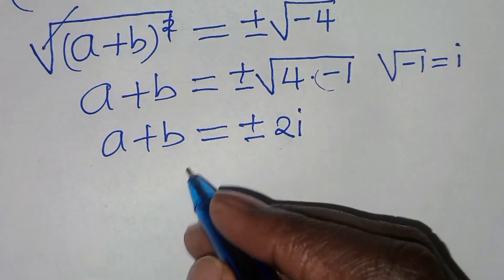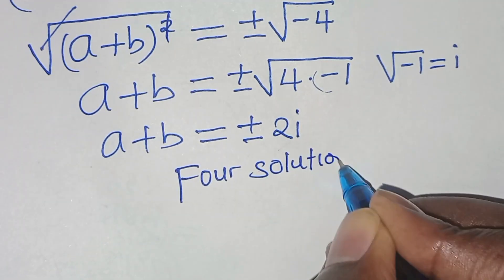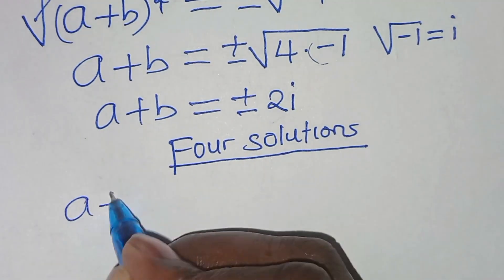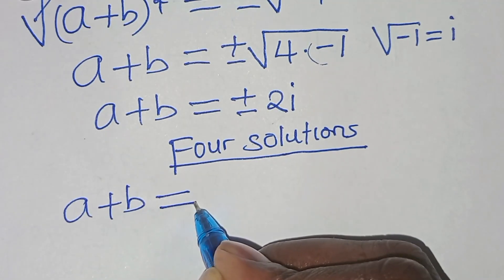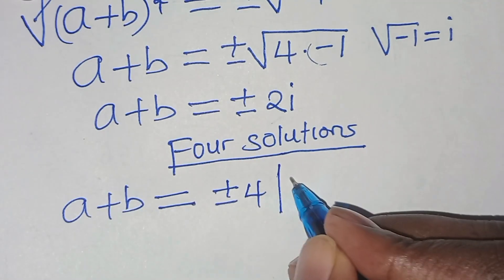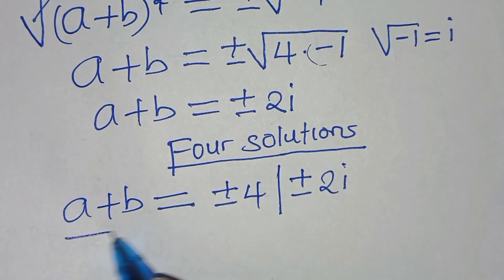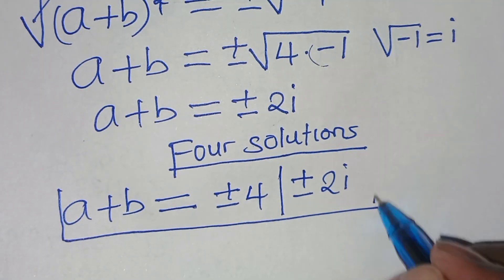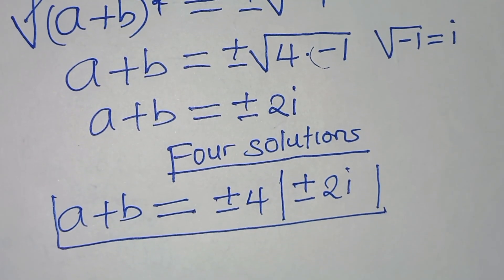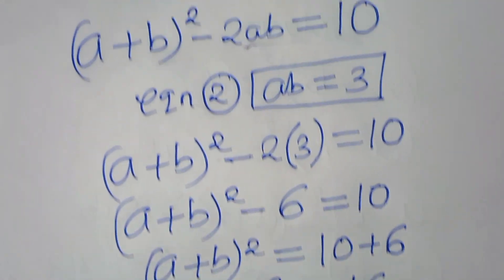So we have four solutions to this algebra problem: a plus b equals plus or minus 4, or a plus b equals plus or minus 2i. Kindly follow the steps, like this video, and subscribe. See you in the next video — bye bye!